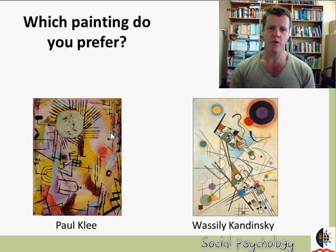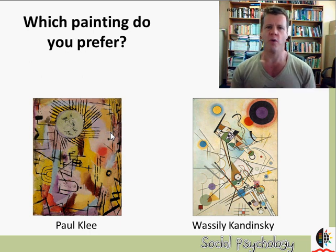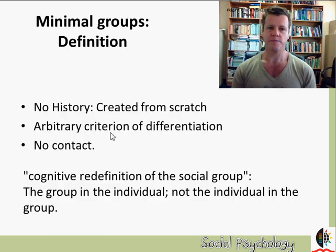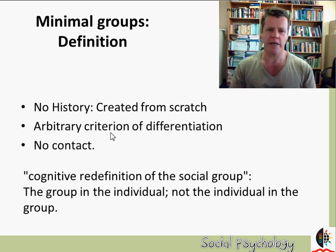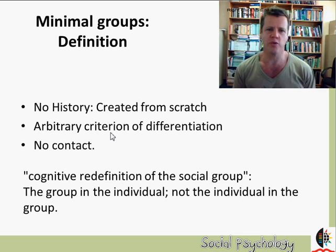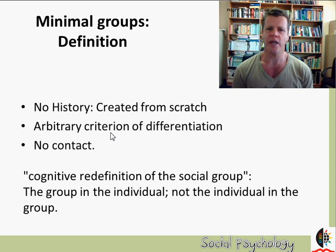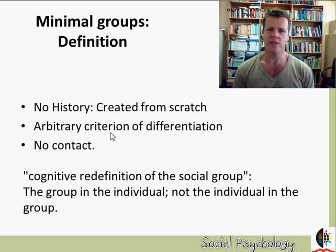That's why it's called the minimal group studies — there are minimal criteria for groupness. The groups have no history; they're created from scratch. The boys are shown pictures, make a decision, and are assigned into groups. In fact, the researchers assigned them randomly, although the boys believed they were in the Klee or Kandinsky group. The criterion of assignment was arbitrary.